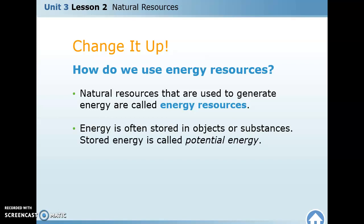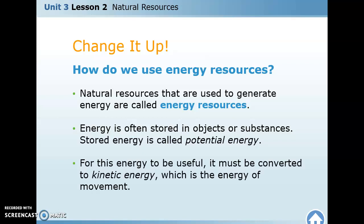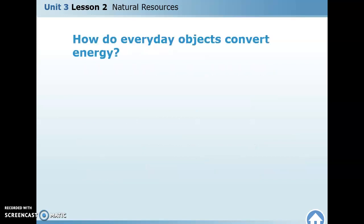Energy stored in something is called potential energy — for example, wood just sitting there has potential energy. For that energy to be useful, we actually have to do something with it. Kinetic energy is the energy of movement. When we use energy to power machines, an energy source causes a turbine to spin — like boiling water where the steam makes a fan spin, which turns the turbine and produces electricity.